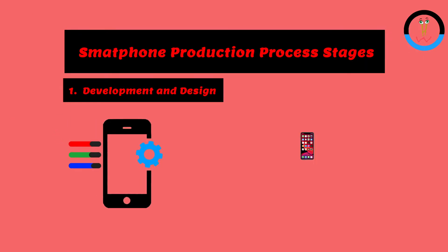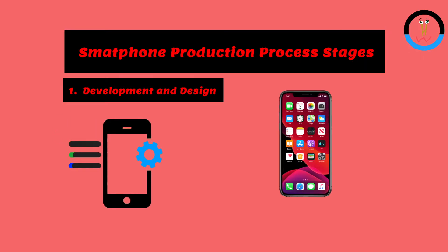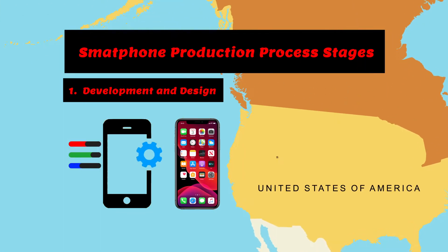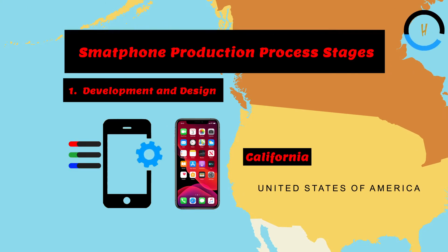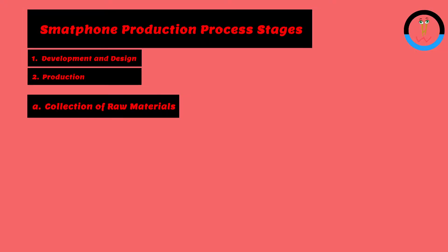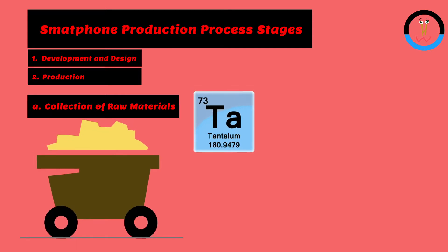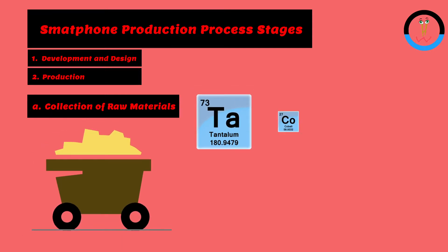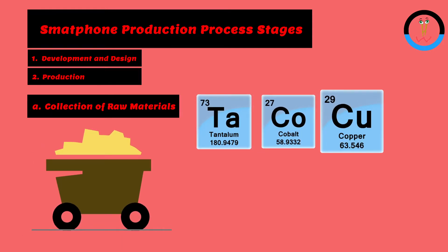First there is the development and design of a new smartphone model. This is done by the company's own product design departments — at Apple, for example, their headquarters in California. The production process then starts with the collection of raw materials. For a smartphone, a whole variety of materials are needed. Metals such as tantalum, cobalt, and copper are particularly important.